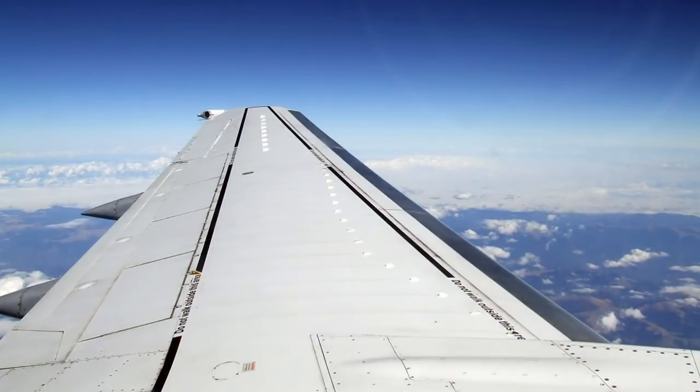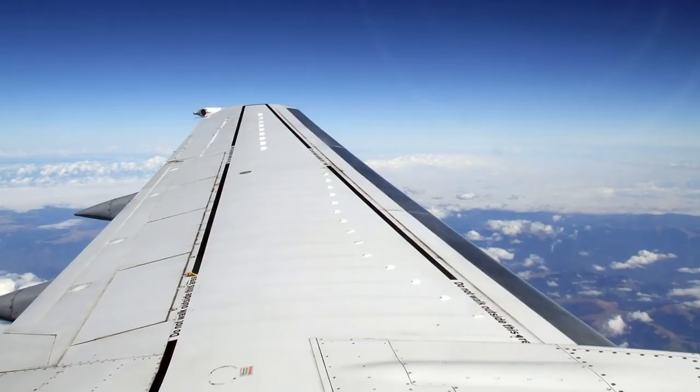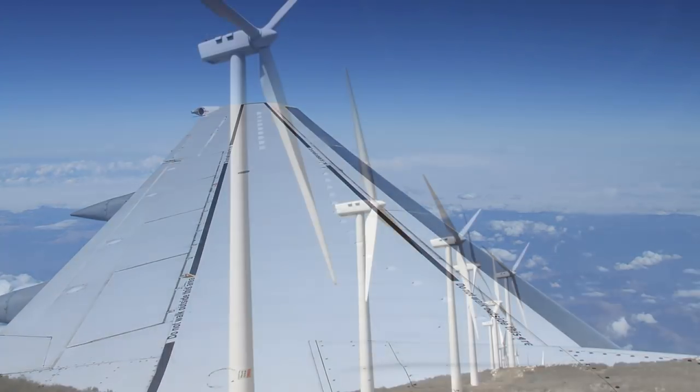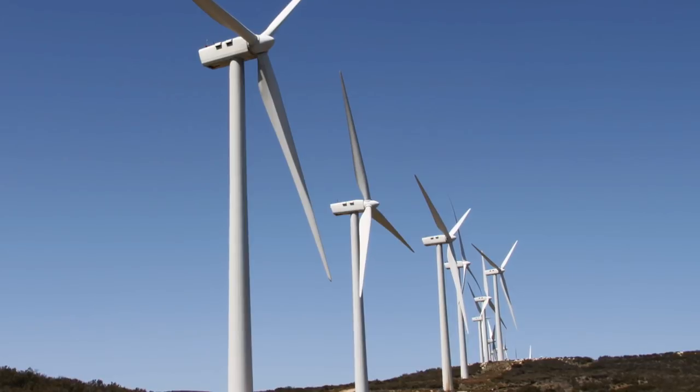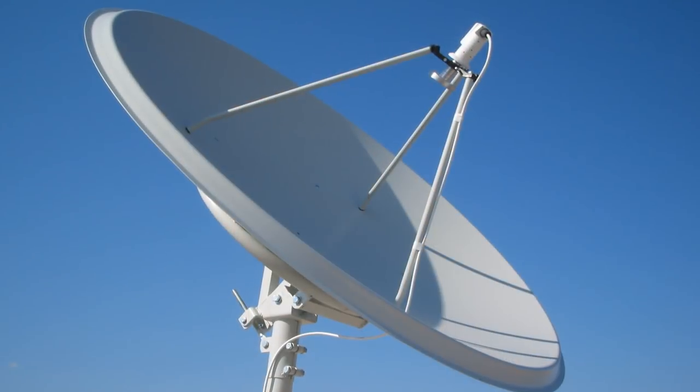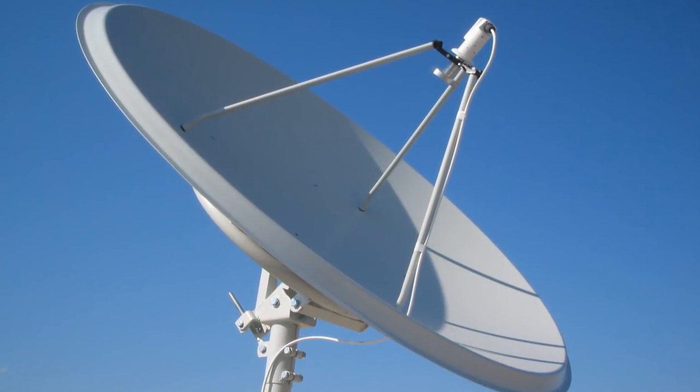It can be used on airplane wings to prevent icing effects while they're in flight. They can be used on these large windmills you see that generate electricity. And it can be used on simple things like satellite dishes on your house, so ice won't accumulate during the wintertime and keep your TV reception.